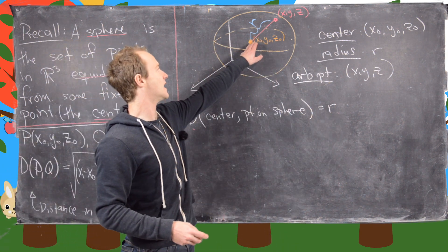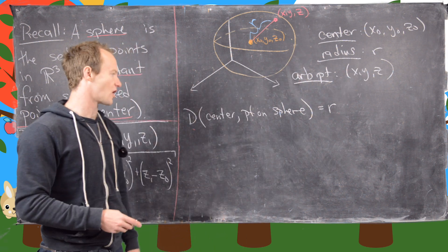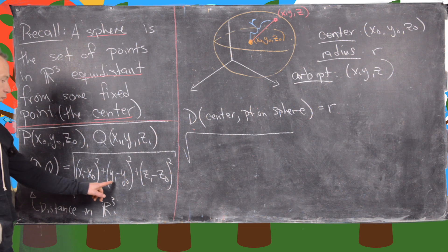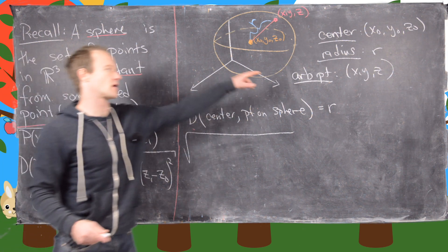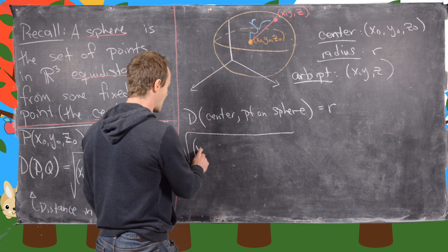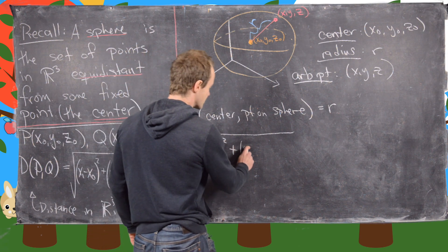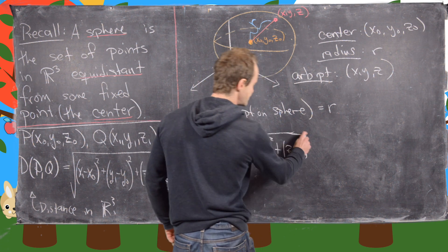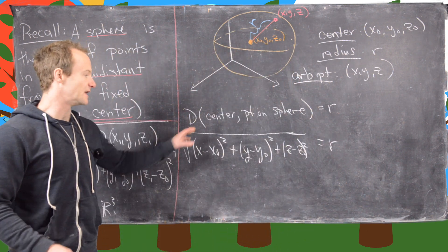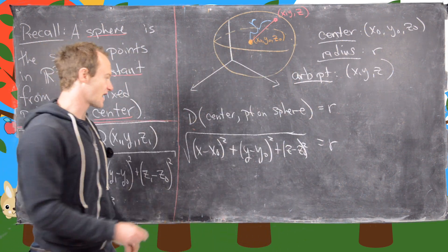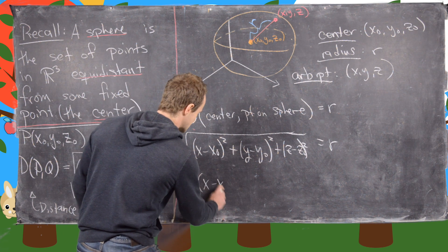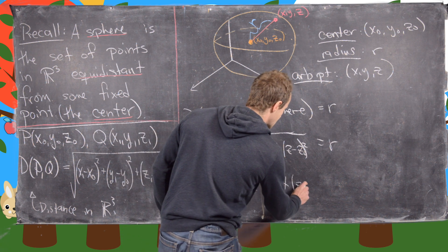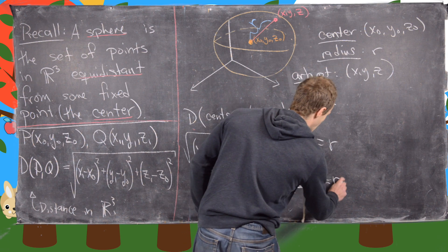We have a coordinate for the center and a coordinate for an arbitrary point, so we can plug that into the distance formula, taking (x₁, y₁, z₁) to be our arbitrary point (x, y, z). That gives us the square root of (x − x₀)² + (y − y₀)² + (z − z₀)² equal to R. Squaring both sides to get rid of the radical gives us (x − x₀)² + (y − y₀)² + (z − z₀)².